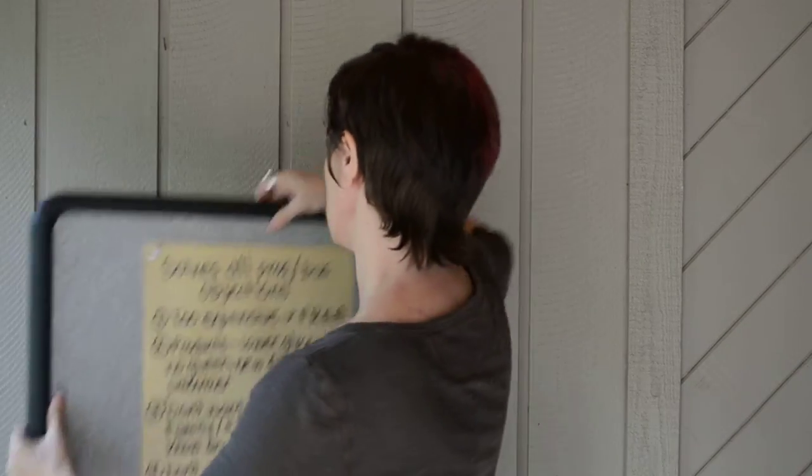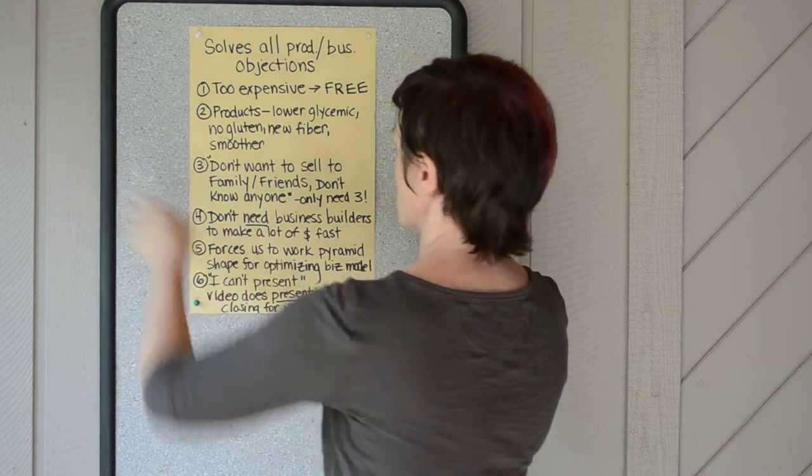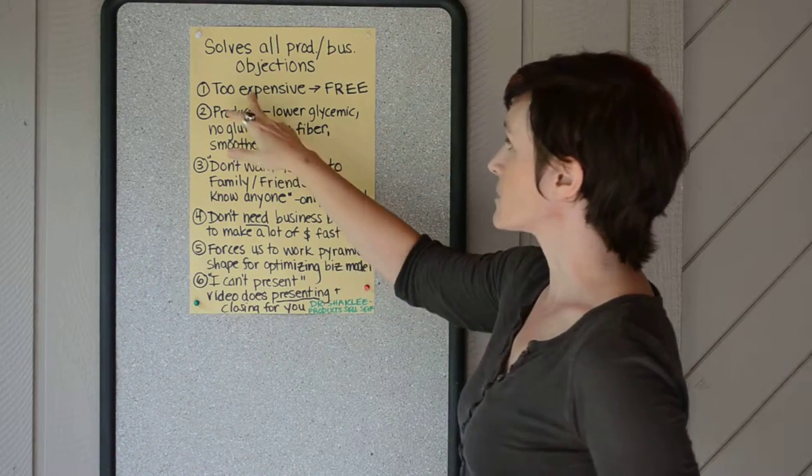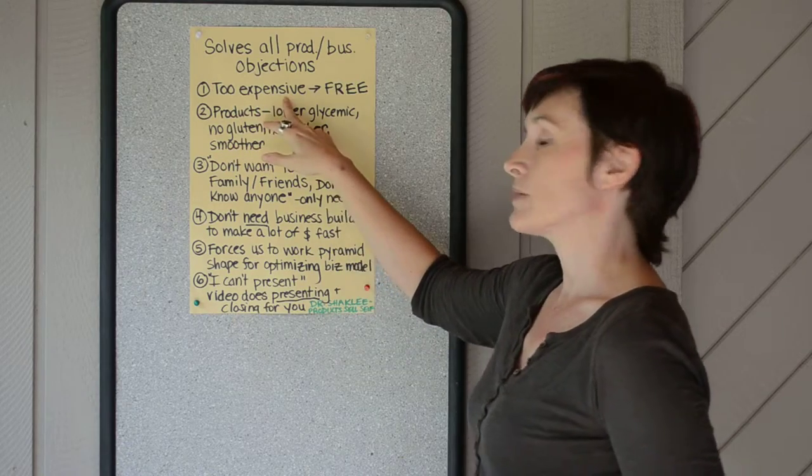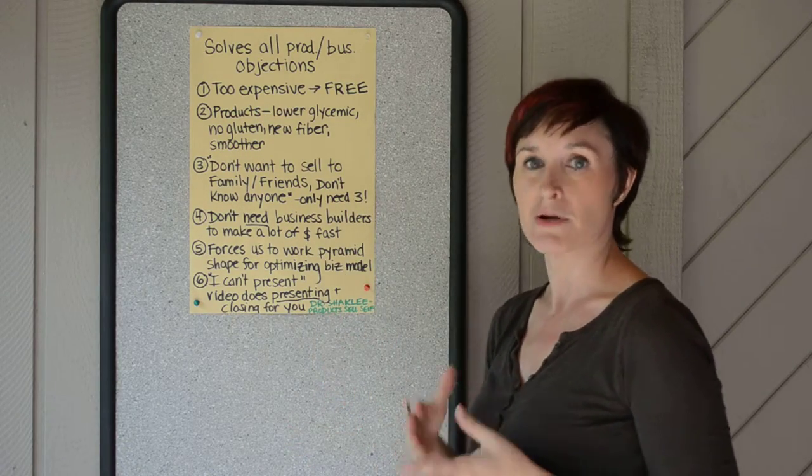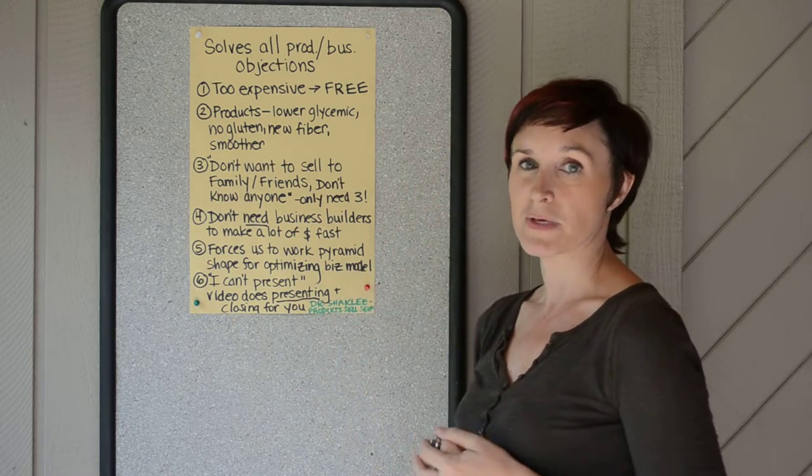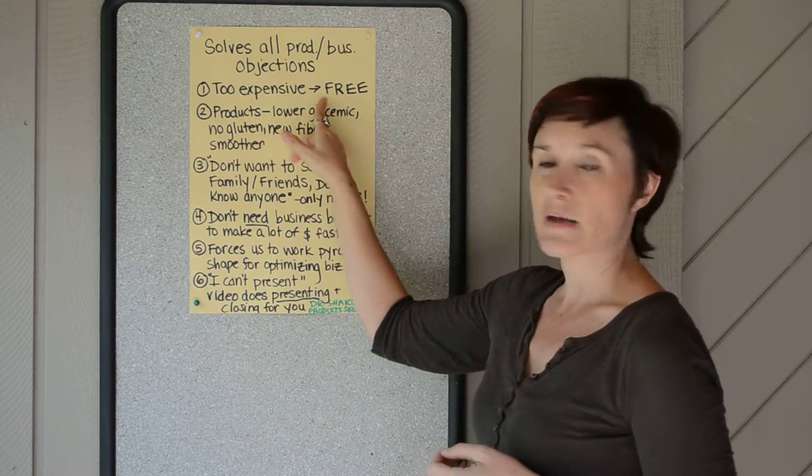So, moving on, I would like to just go over how this solves all of our product and business objections. The first two have to deal with products. Somebody may say the products are too expensive. Yes, it's only $3 per organic, high-protein meal, but if somebody has to feed a large family, that can still be expensive. And this solves that problem.